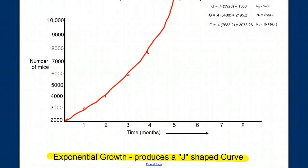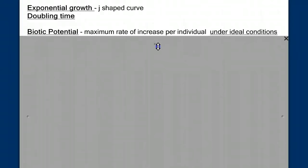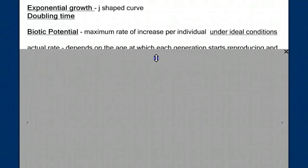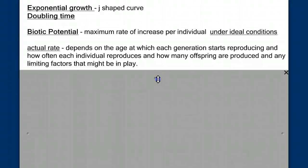Now, this is what will happen to populations under ideal conditions, with nothing slowing down the rate of growth. We would say that this population is growing at its biotic potential, the maximum rate of increase per individual under ideal conditions. But we most likely don't have ideal conditions. And so the actual rate of growth depends on factors such as the age at which we start reproducing and how often each individual reproduces and how many offspring are produced, and the limiting factors that might be in play.